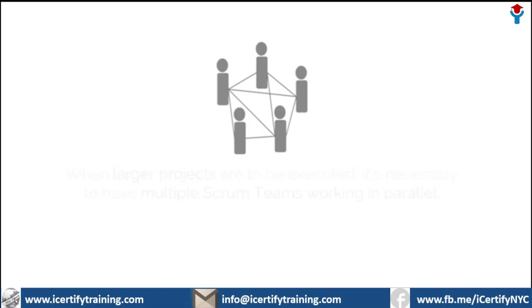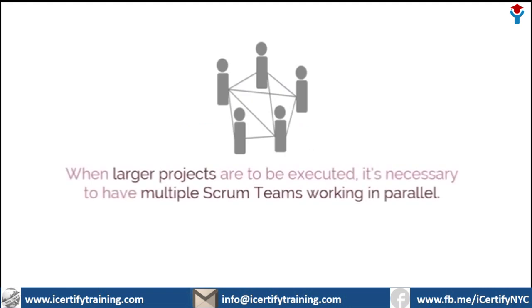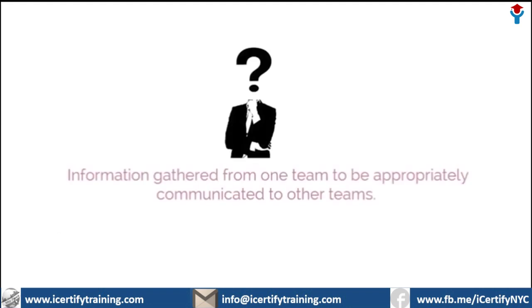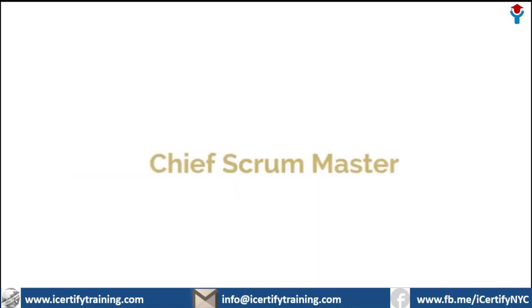Now, when there are larger projects to be executed, it's necessary to have multiple Scrum teams working in parallel. And of course, it's crucial that information gathered from one team be appropriately communicated to other teams. The Chief Scrum Master is responsible for this activity.